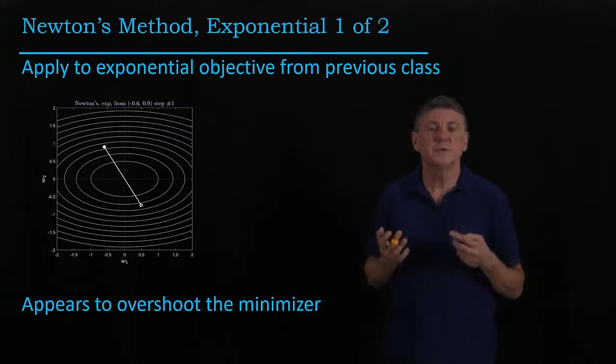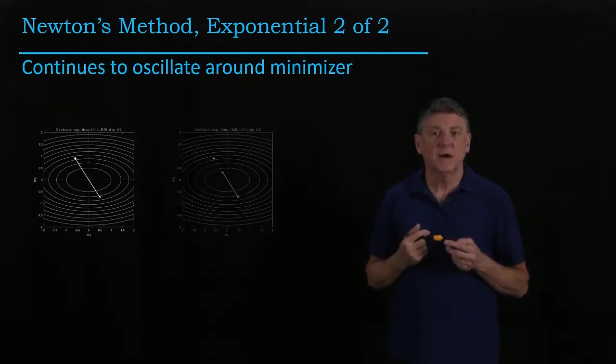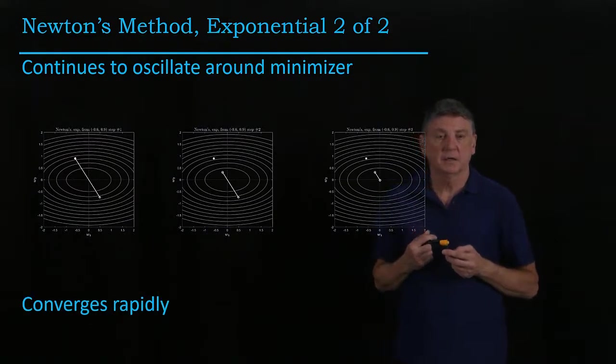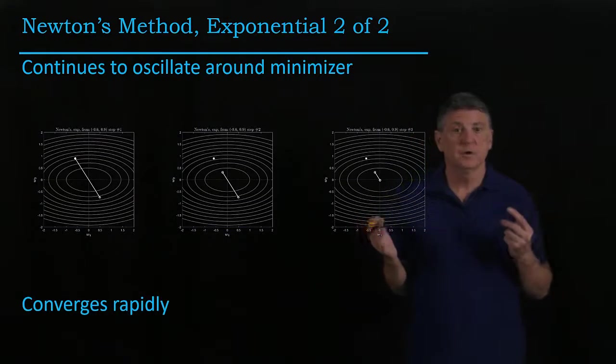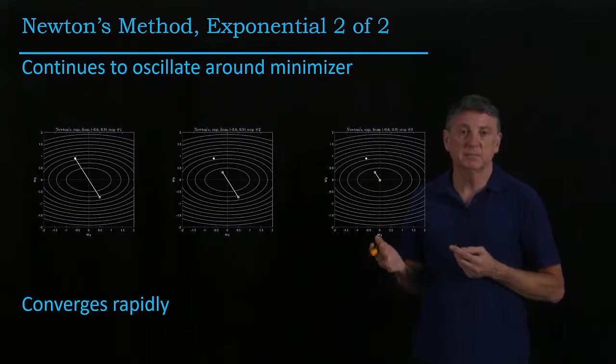What happens if we continue to iterate? What we see is that it will gradually approach the minimizer, but it will do so by oscillating. It does, however, converge more rapidly than the fixed step sizes methods that we looked at and more rapidly than backtracking.